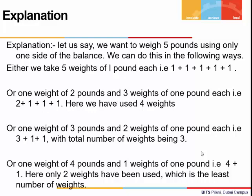Let's say we want to weigh 5 pounds using only one side of the balance. We can do this in 4 ways. First, we take 5 weights of 1 pound each and put all of them in one pan — they add up to 5, using 5 weights. Another case uses 1 weight of 2 pounds and 3 weights of 1 pound each — here we have used 4 weights, which has come down from the previous case.